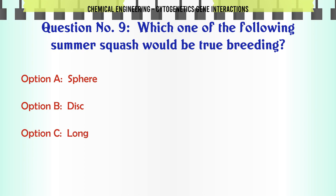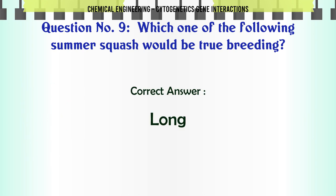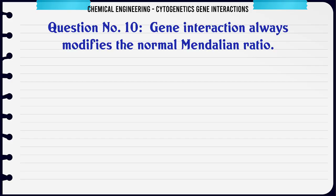Which one of the following summer squash would be true breeding? A. Sphere, B. Disc, C. Long, D. Short. The correct answer is Long.